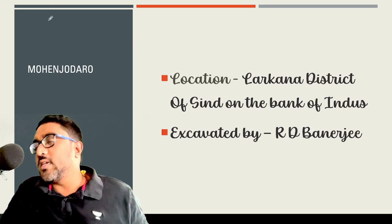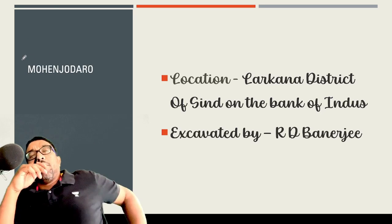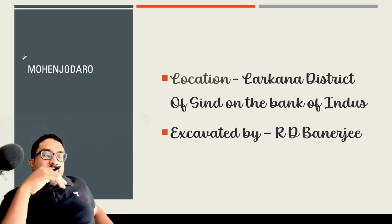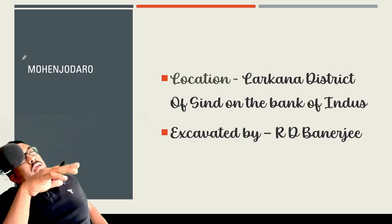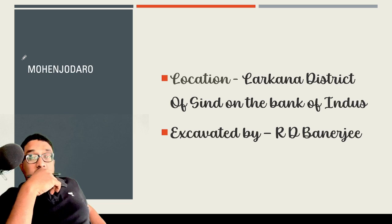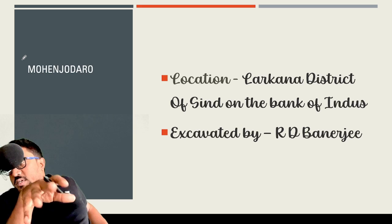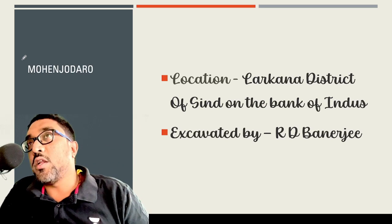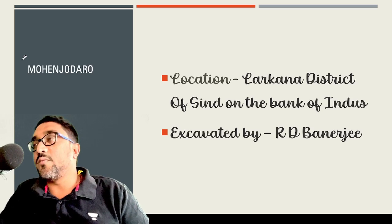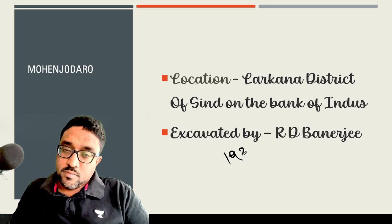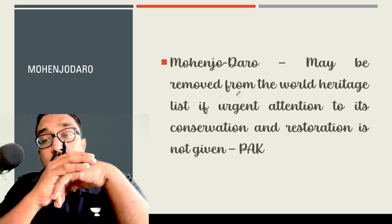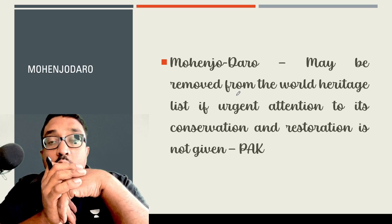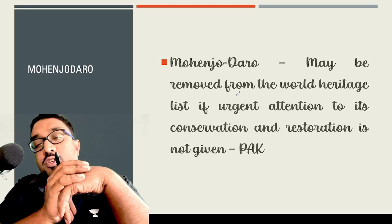Last year, another current affairs topic — Mohenjo-daro in Pakistan had been in news. Pakistan's own historical department, equivalent of the Archaeological Survey of India, openly said that Mohenjo-daro, which is Pakistan's UNESCO World Heritage Site, is on the verge of losing its UNESCO World Heritage status because of lack of preservation, conservation, and lack of funds. It was originally excavated in 1921 by R.D. Banerji, an Indian archaeologist. Pakistan recently said that the World Heritage list may remove Mohenjo-daro if urgent attention to conservation and restoration is not given by the government of Pakistan.